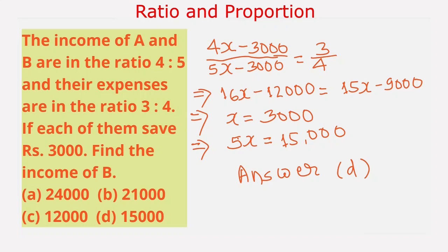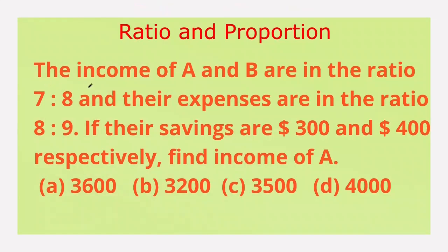We go to the next question. The income of A and B are in the ratio 7:8 and their expenses are in the ratio 8:9. If their savings are $1,300 and $1,400 respectively, find the income of A. The given options are: option A 3,600, option B 3,200, option C 3,500, option D 4,000.